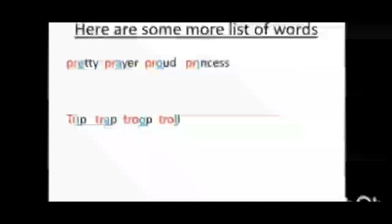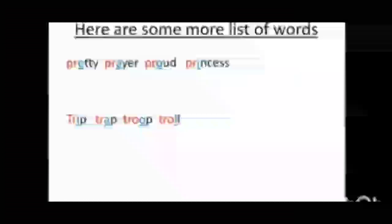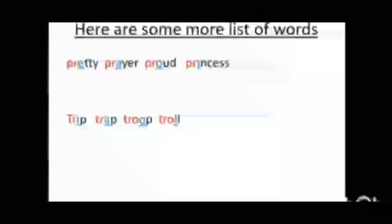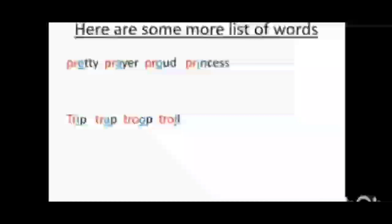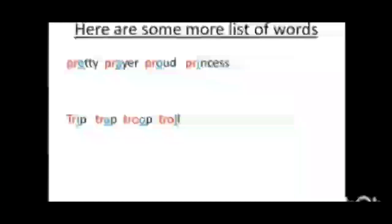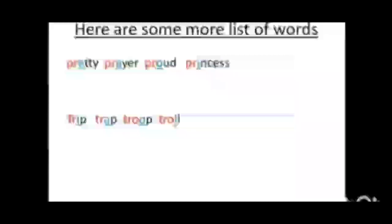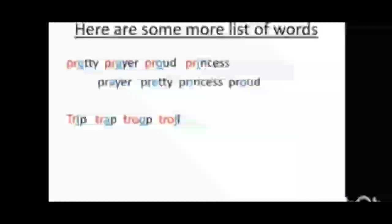Here are some more words: pretty, prayer, proud, princess. You can see, children, in this list of words the first two letters are the same. So we will sort them by looking at their third letter. A will come first, followed by E, then I, and then O. The list of words will be like this: prayer, pretty, princess, proud.